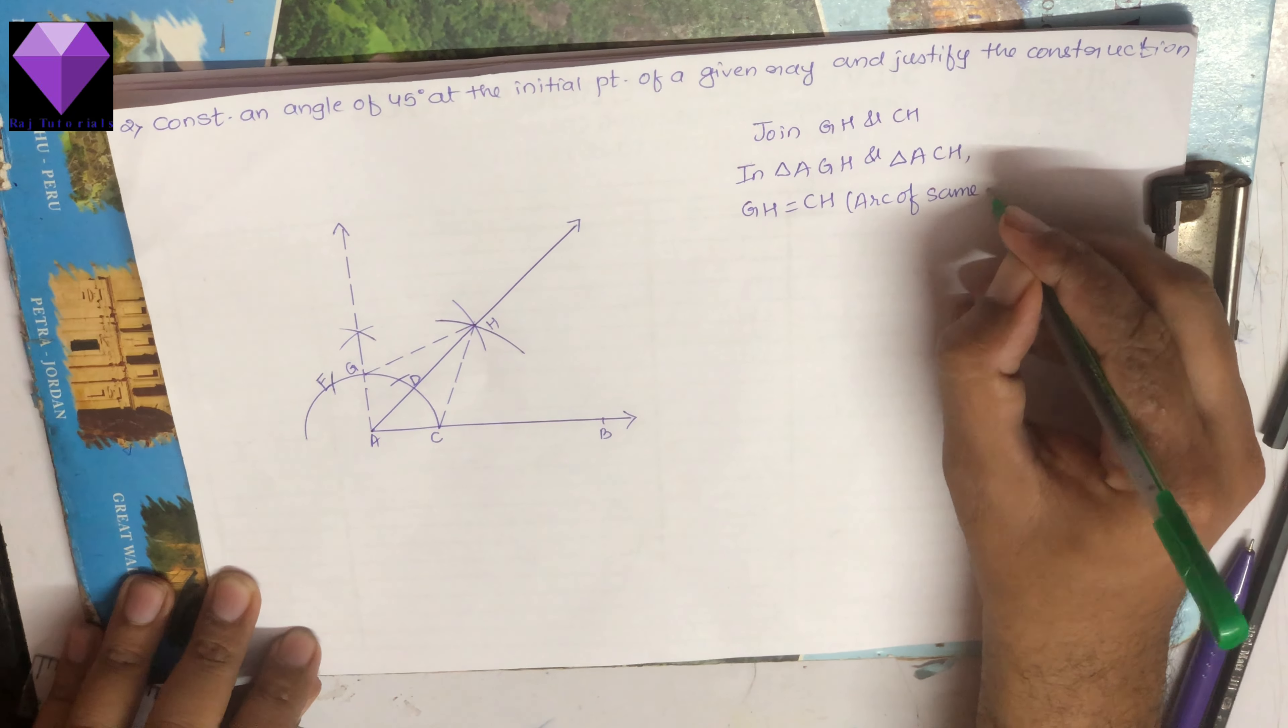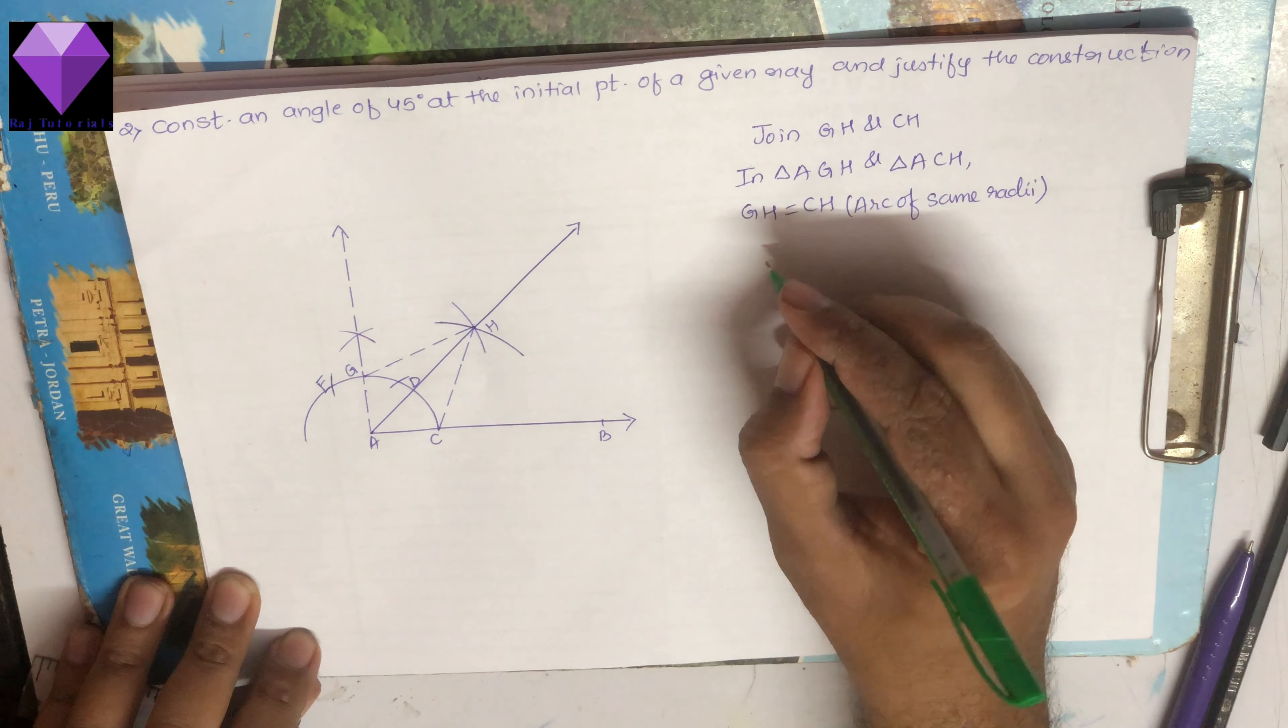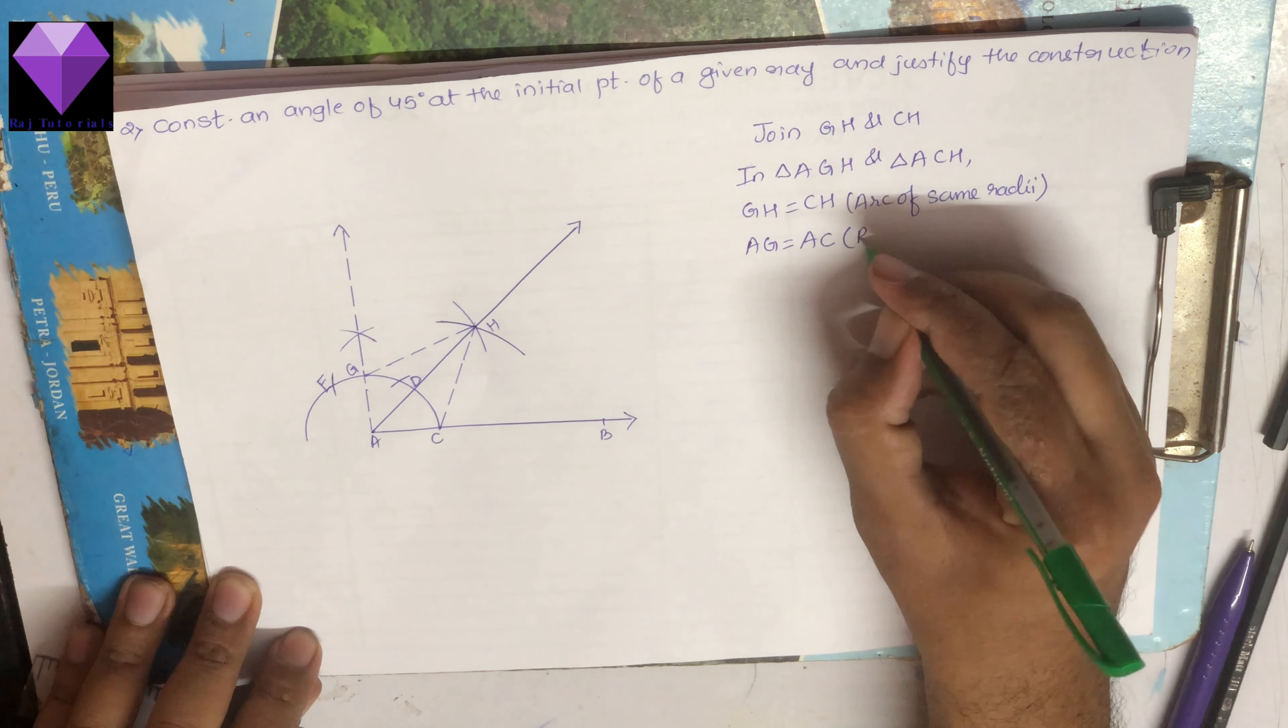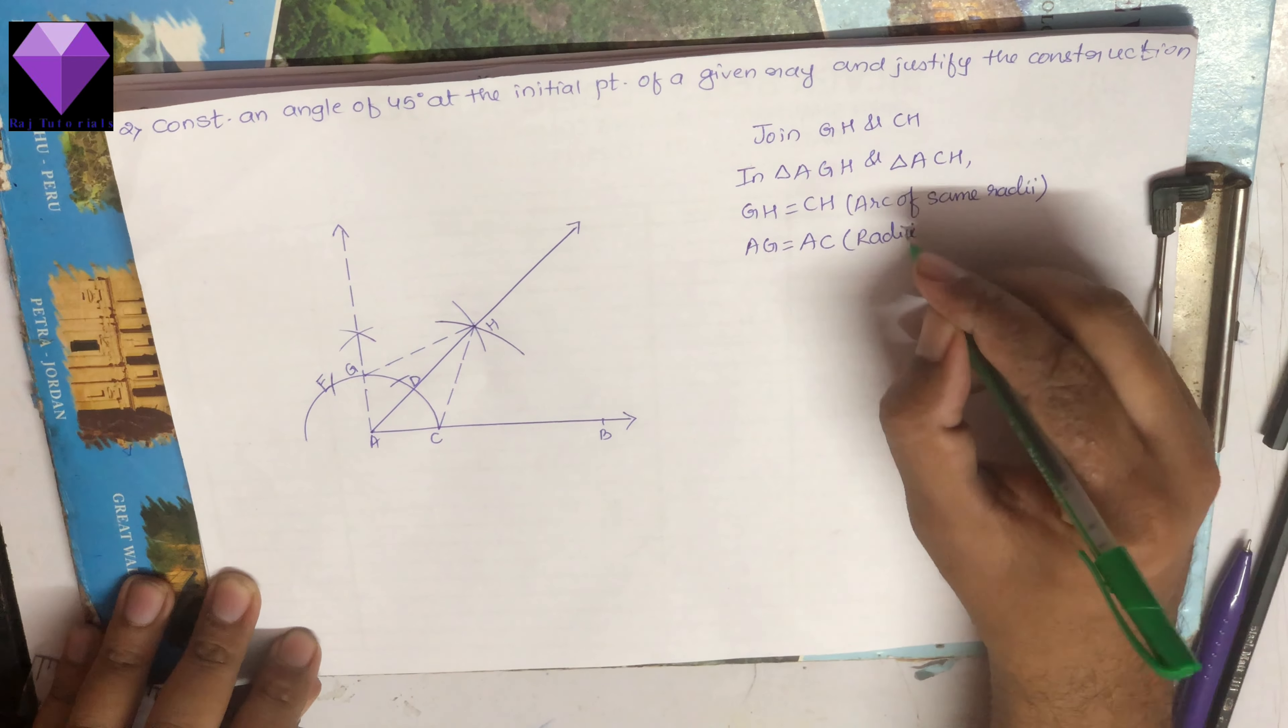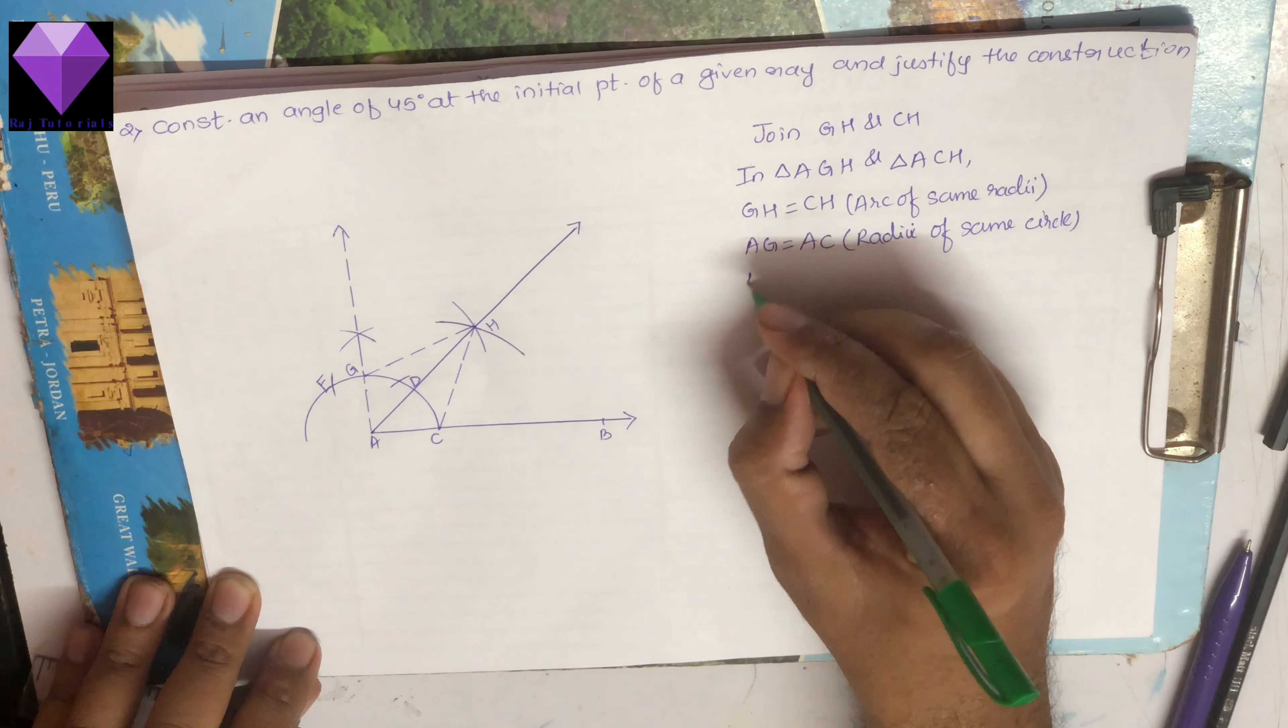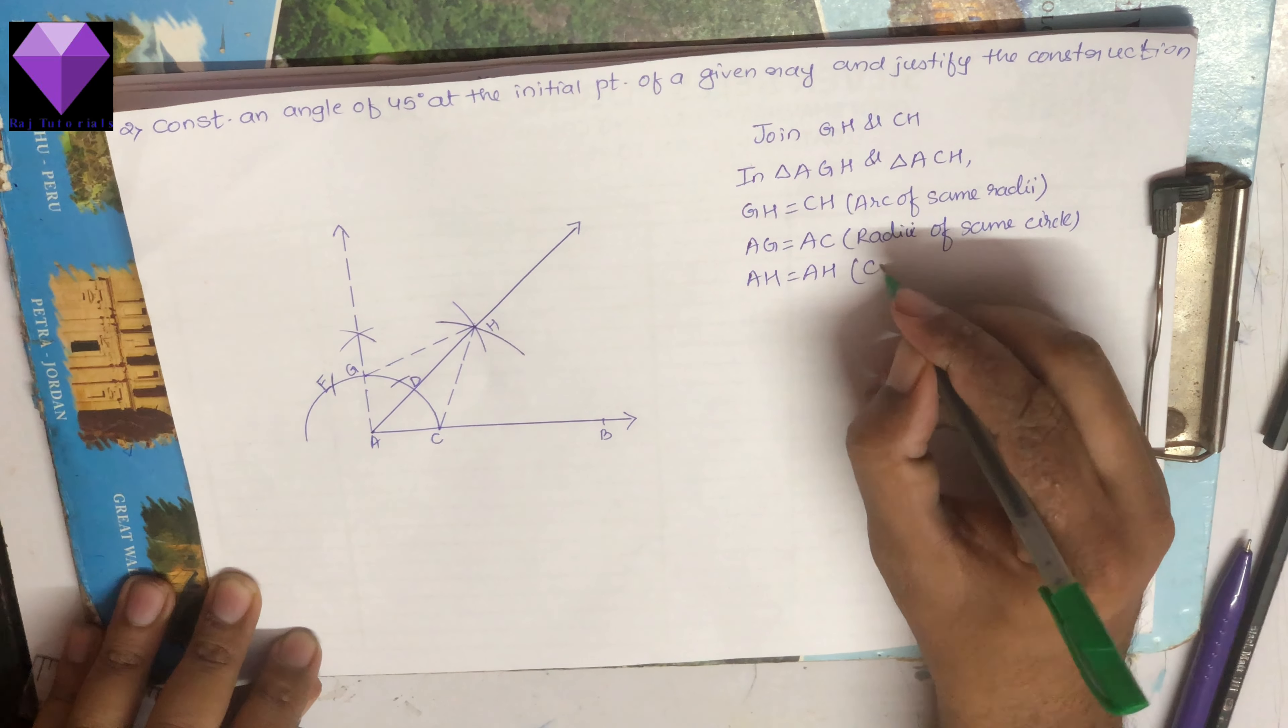AG equals AC, radii of the same circle. AH equals AH, common side.